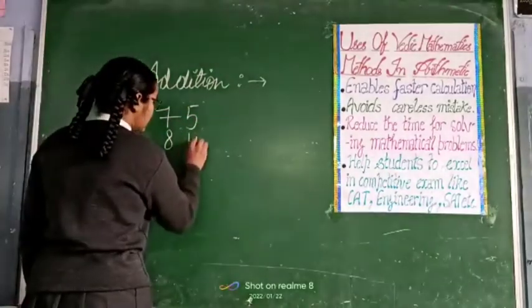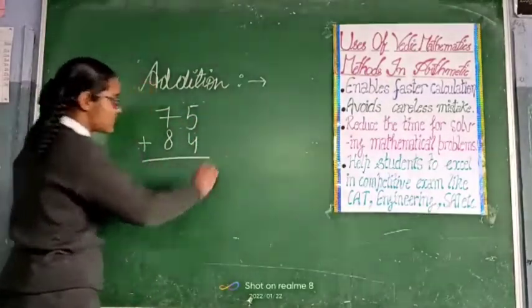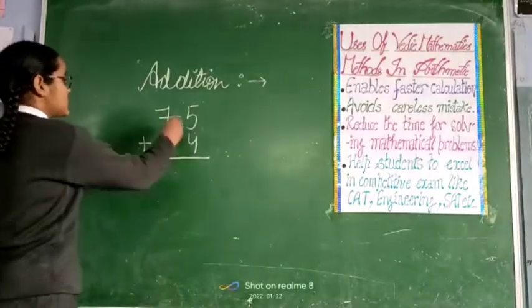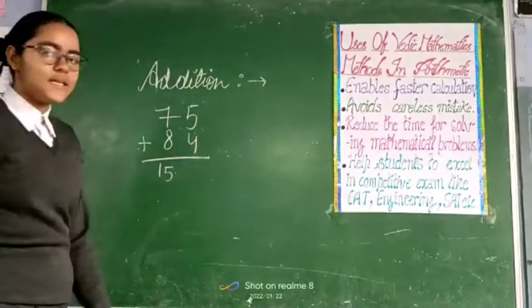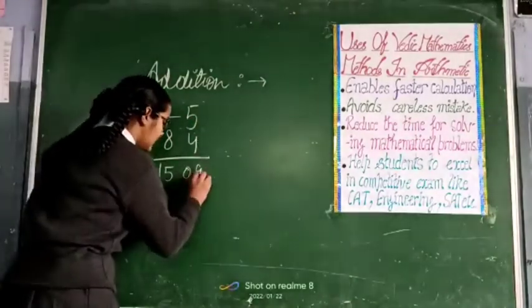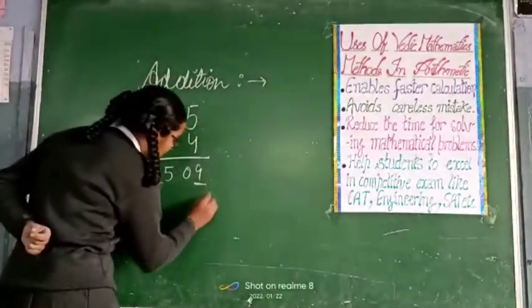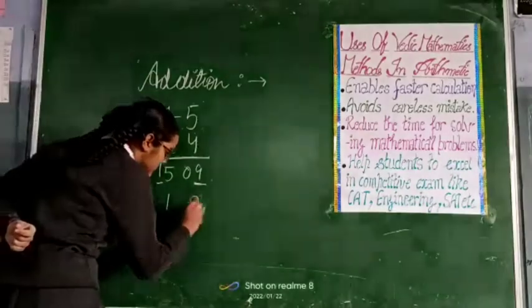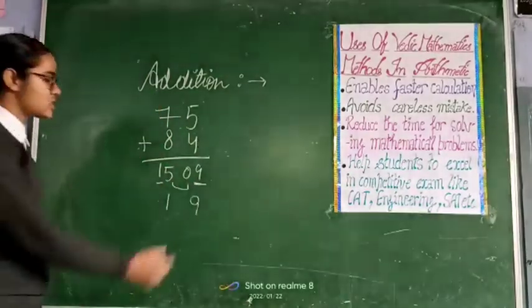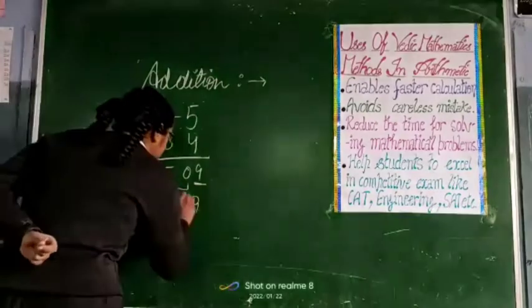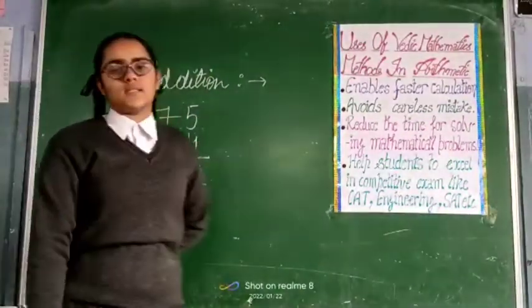75 plus 84. When we plus both numbers, 7 plus 8 makes 15. 5 plus 4 makes 9. It is starting units and ending units. Write as it is. And when we plus both numbers, 5 and 0 which is between numbers, then it makes 5. 159 is your final answer.